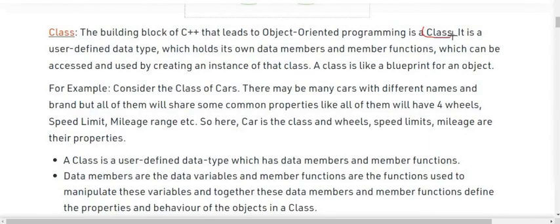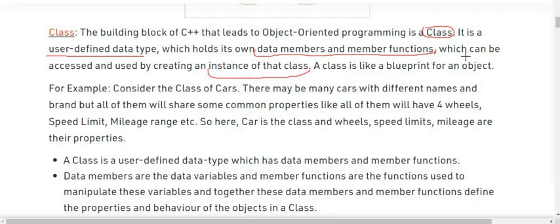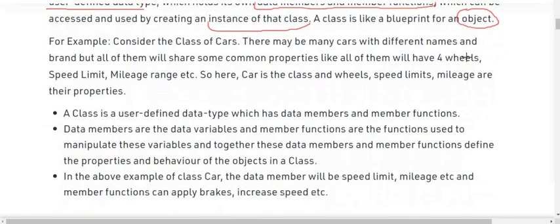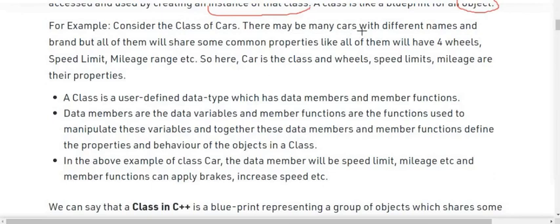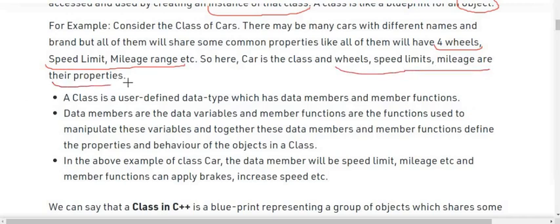A class is a user-defined data type which holds its own data members and member functions. It holds two things: first, data members, and second, member functions, which can be accessed and used by creating an instance of that class — that instance is also known as an object. For example, consider a class of Car. There may be many cars with different names and brands, but all of them will share some common properties like four wheels, speed limit, mileage range, etc.